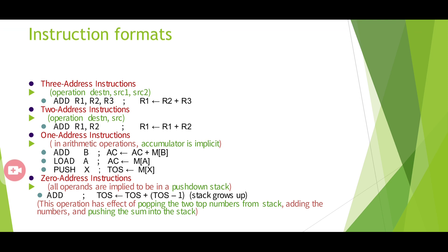The first format is the three-address instruction, where along with an opcode, three addresses are specified: one destination address and two source addresses. For example: ADD R1, R2, R3 — this is a three-address instruction because three addresses are mentioned.